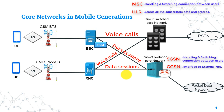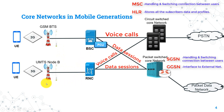The difference between 2G and 3G is not in the core but in the access networks and the air interface. In the access networks, 2G uses the BTS, Base Transceiver Station, and BSC, Base Station Controller, while in 3G there is Node B replacing the BTS, and RNC, Radio Network Controller, replacing the BSC. Also, 2G uses a combination of TDMA and FDMA techniques, while 3G uses CDMA, which provides 3G networks with higher data rates compared to 2G.